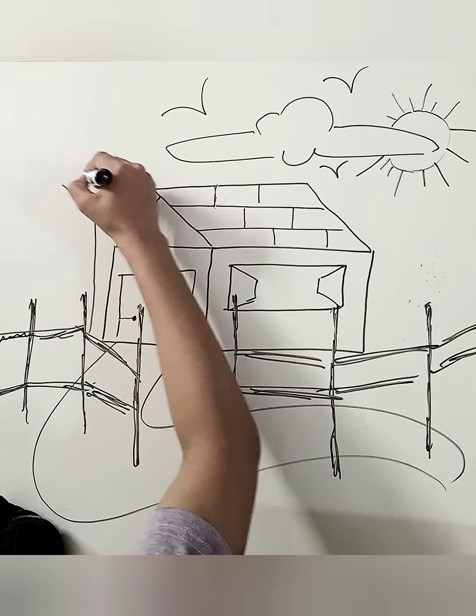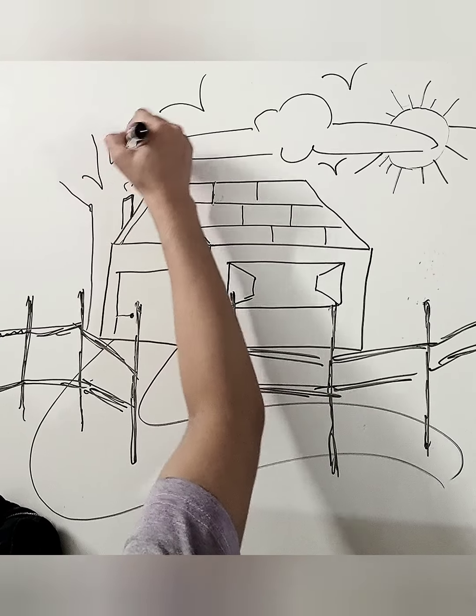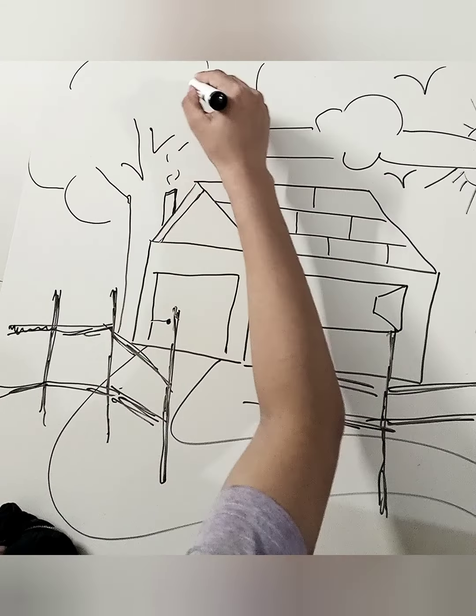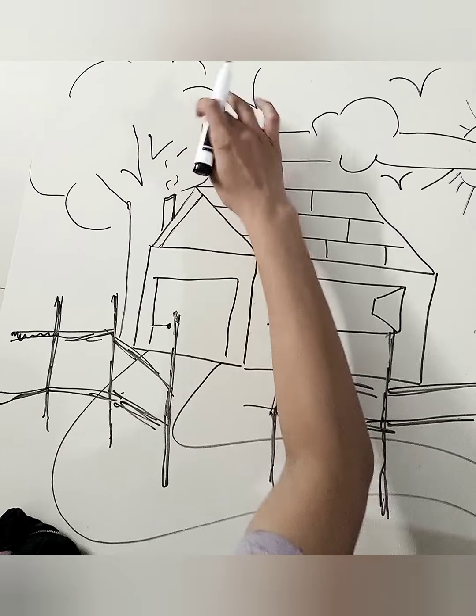Now we are making a tree. Draw straight lines. These are the stems. Draw semi-circles.